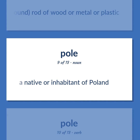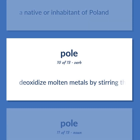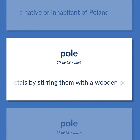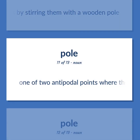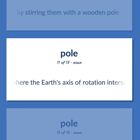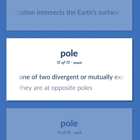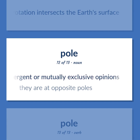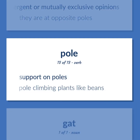A native or inhabitant of Poland. Deoxidize molten metals by stirring them with a wooden pole. One of two antipodal points where the Earth's axis of rotation intersects the Earth's surface. One of two divergent or mutually exclusive opinions. They are at opposite poles. Support on poles. Pole climbing plants like beans.